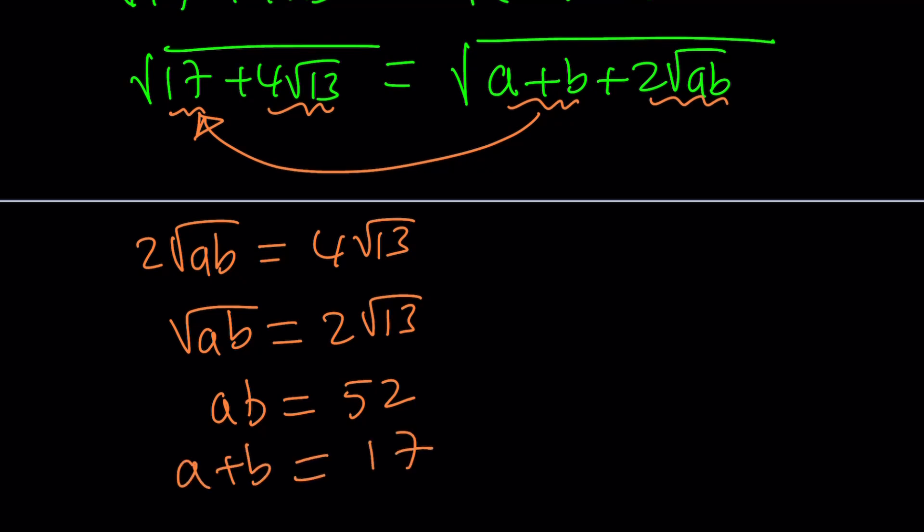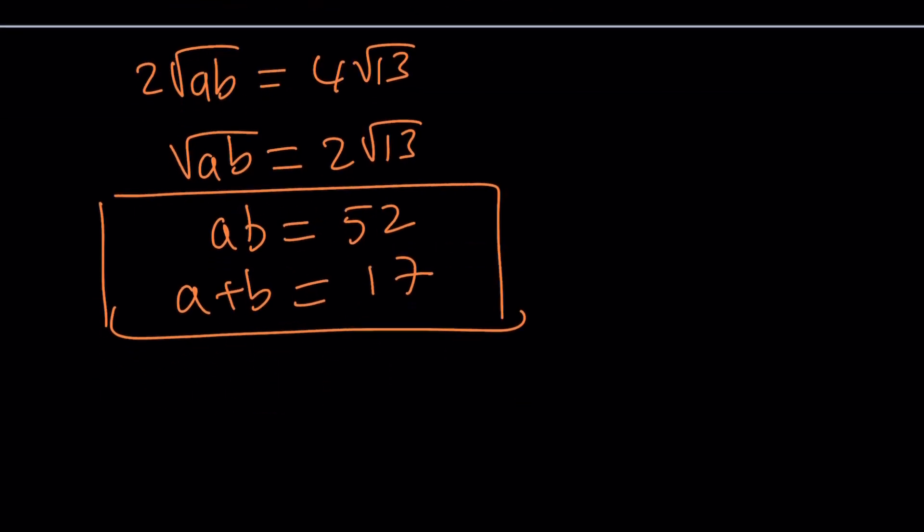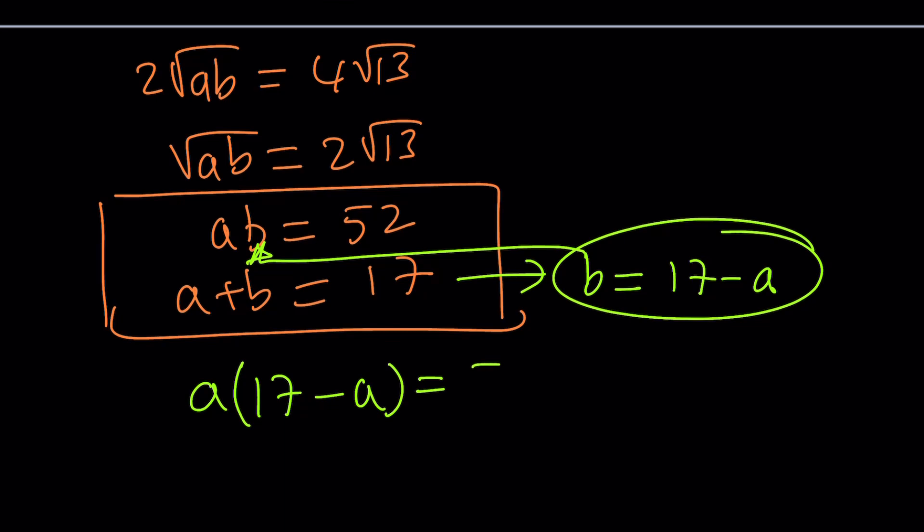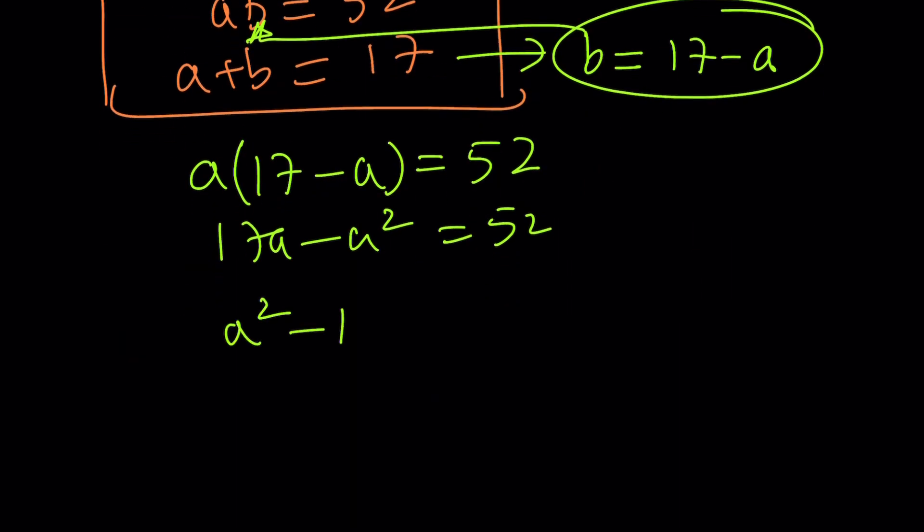So I basically got to find two numbers whose product is 52 and whose sum is 17. Kind of like solving a trinomial or trying to factor a trinomial by finding those two numbers. Very similar. So how do you do this? Guess and check will work nicely. Or if you want, you can turn this into a quadratic equation from the second equation. You can isolate b, write it as 17 minus a, and then go ahead and plug that in here. That gives you a times 17 minus a equals 52. And then 17a minus a squared equals 52. And this is what I mean by the trinomial, where it comes down to finding two numbers whose product is 52 and whose sum is negative 17.